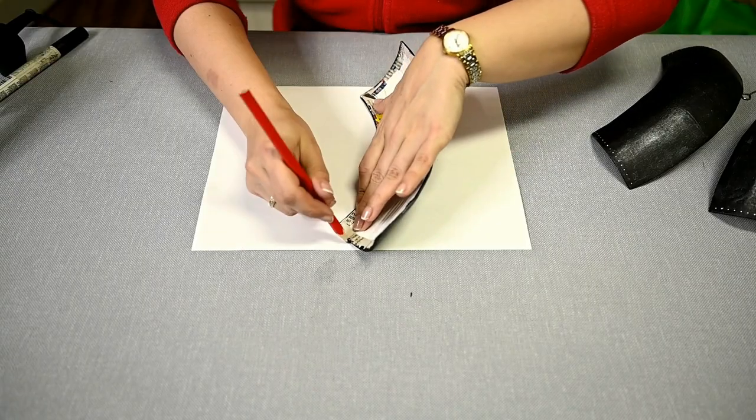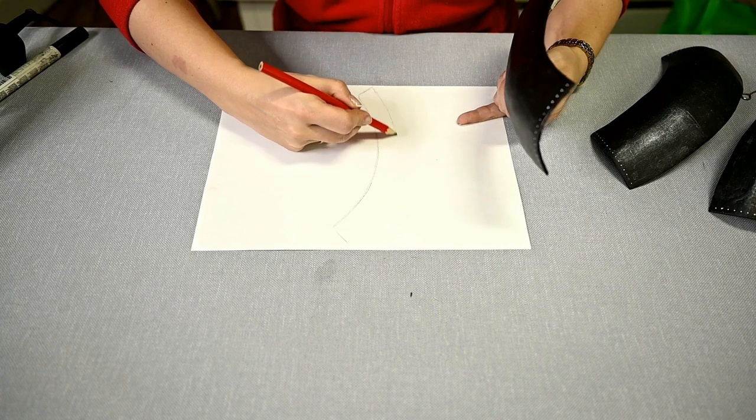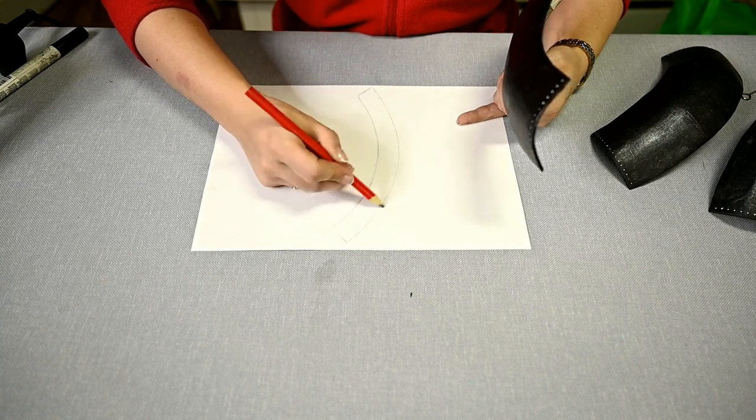I'm making a paper template of the quarter of the donut, make markings, cutting it out and poking it with a thick needle.